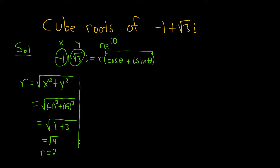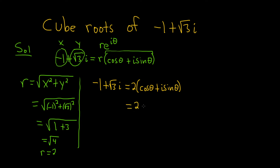The next step is to find theta. We have negative 1 plus square root of 3 times i, and we plug it back in: 2 times parentheses cosine theta plus i sine theta. Then we distribute the 2, so we get 2 cosine theta plus 2i sine theta.